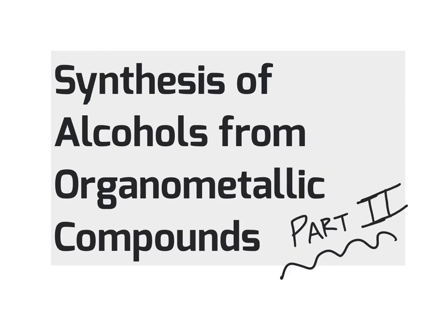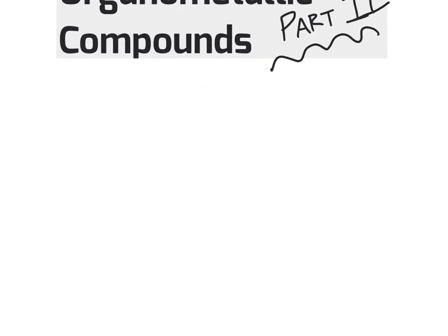This is our second segment on synthesizing alcohols from organometallic compounds. In the first segment we talked about how to create organometallic compounds and some pitfalls, such as the fact that organometallic reagents are strong bases and must be protected from protic sources like water. Now we'll look at what we can do with those compounds to make alcohol products, which will also create new carbon-carbon bonds in the process.